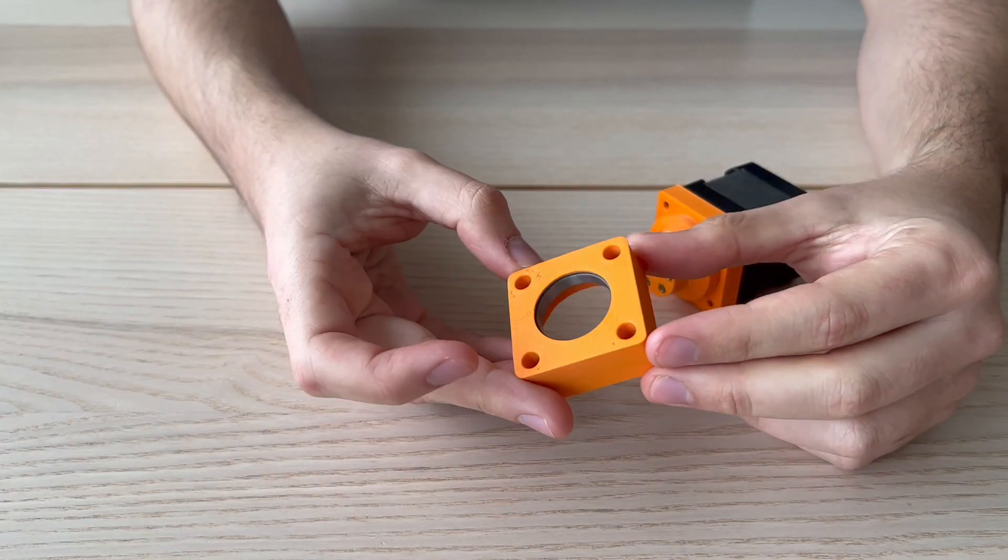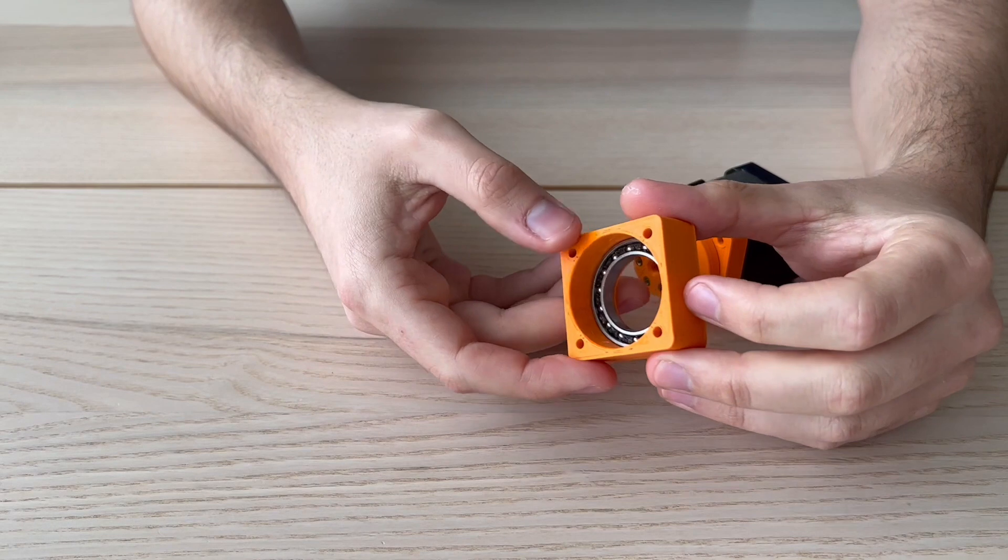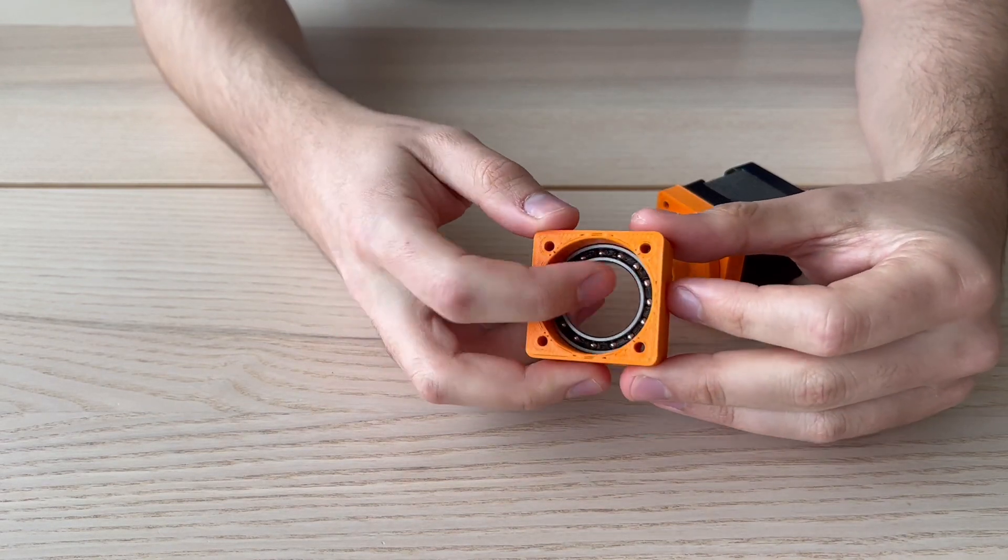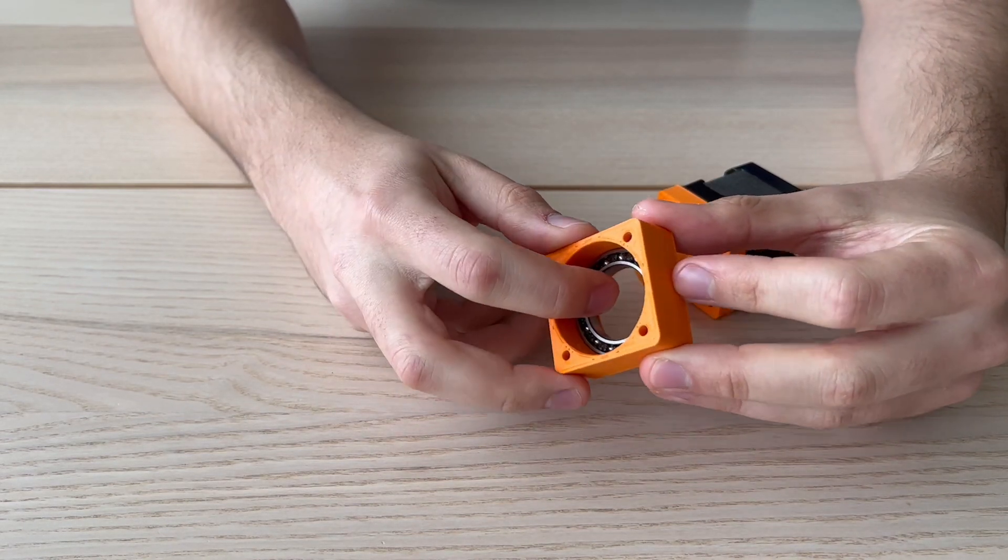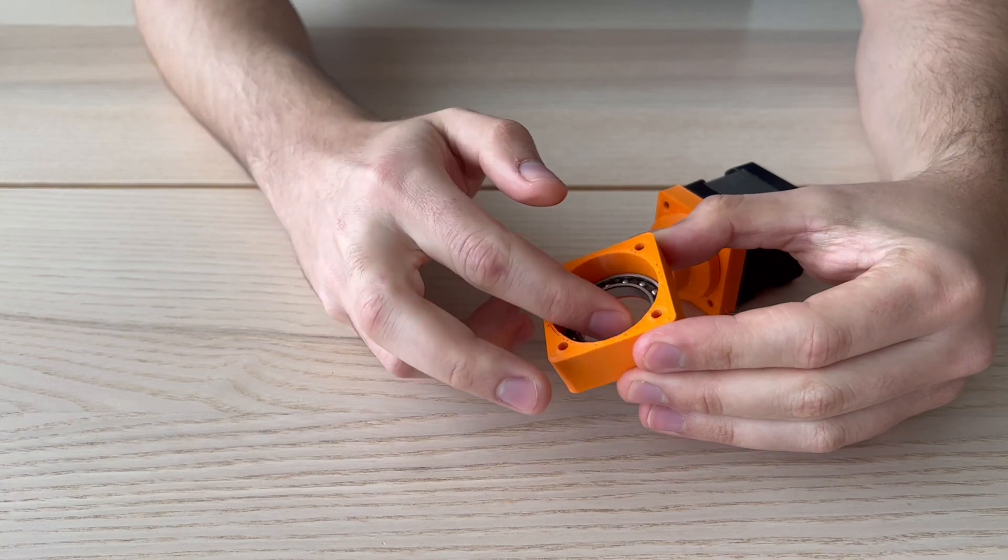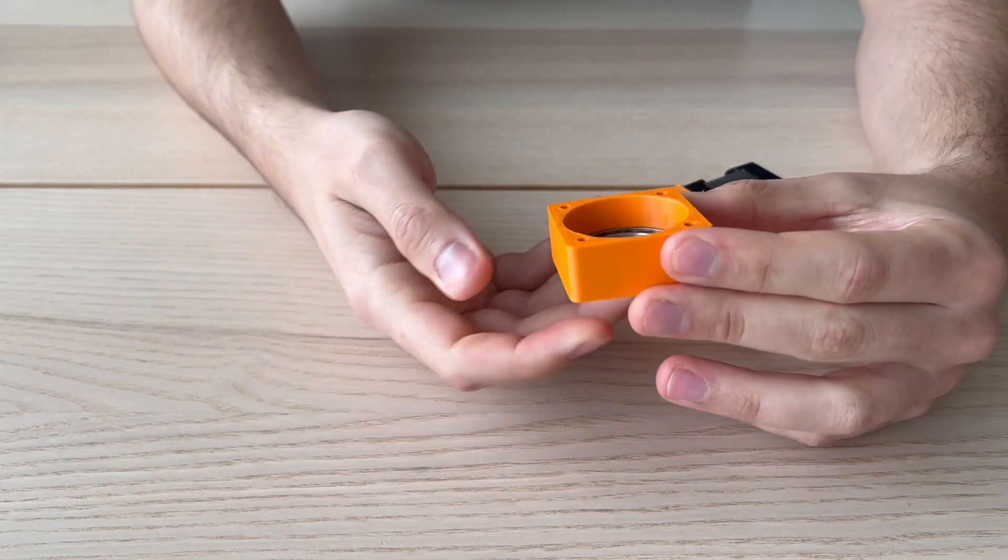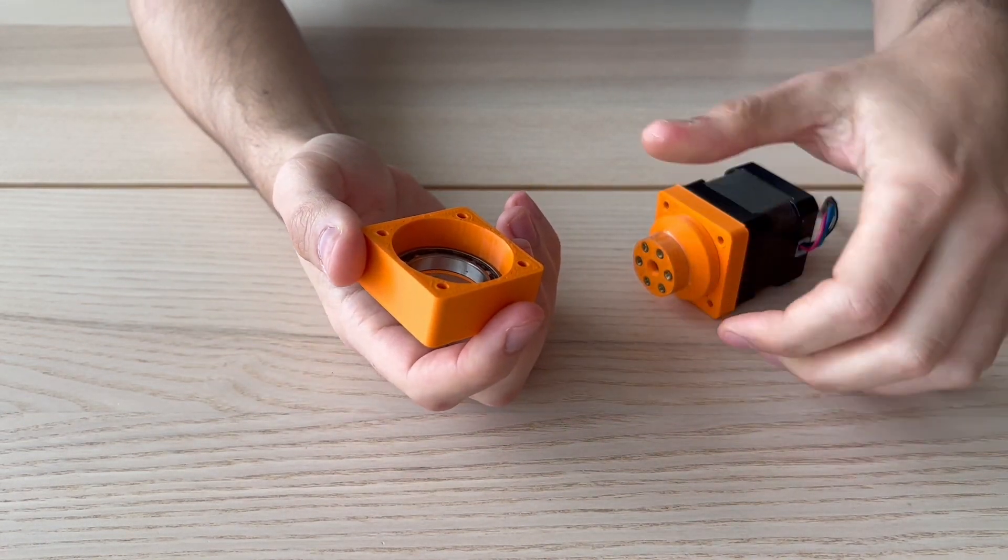Now we are going to proceed to close the assembly. We will put the top cover. Note that a bearing has been introduced before to keep the whole assembly aligned.